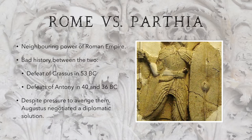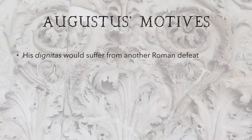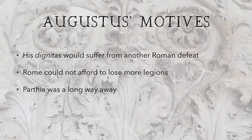But instead of going to war against them, Augustus sought a diplomatic solution through negotiation. This was actually quite a sensible move on his part. Firstly, his dignitas would suffer in the event of another defeat — it would be a really bad look for him. Rome couldn't afford to lose more legions. Parthia was a really long way away and wasn't a direct or immediate threat. And it would prove a drain on Rome's resources, financially as well as in manpower.